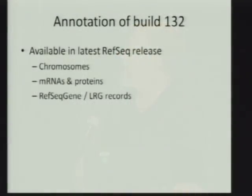The contents of Build 132 have been put out on all of our RefSeq annotations. RefSeq is an NCBI product for chromosomes, mRNA, and proteins. We also collaborate with EBI to make the LRGs — the Locus Reference Genomic records — which are the clinical sequence records for clinical reporting standards, and variations are annotated in all of those places.